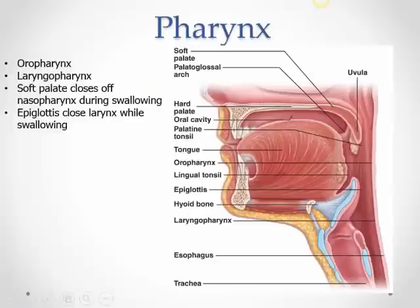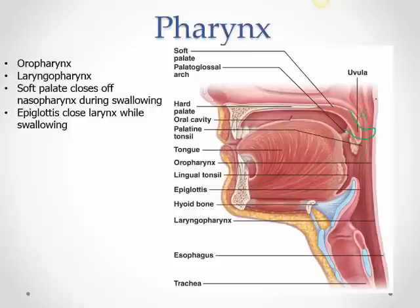From the oral cavity we come to the pharynx. We are concerned with the oropharynx and laryngopharynx. When you swallow, the soft palate goes up to close off the nasopharynx so food doesn't go into the nose. The epiglottis comes down to close the airway so food passes into the esophagus and not the trachea.